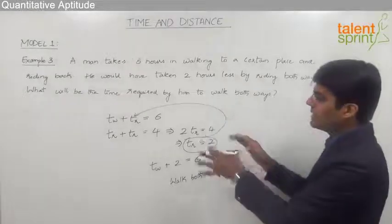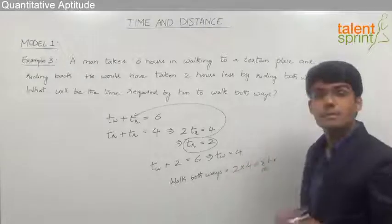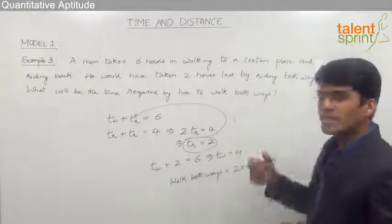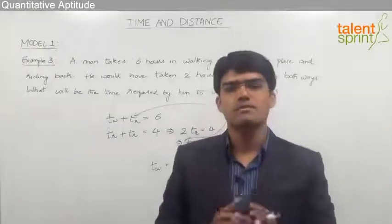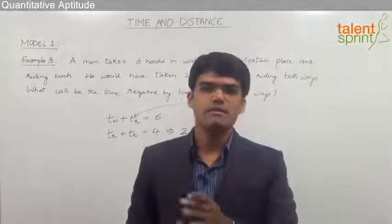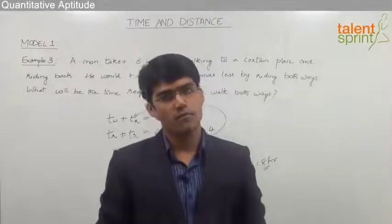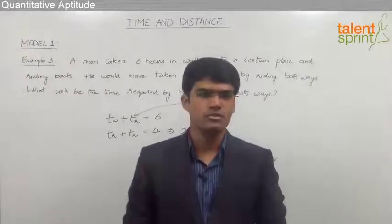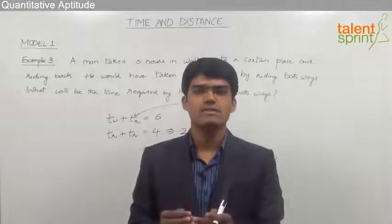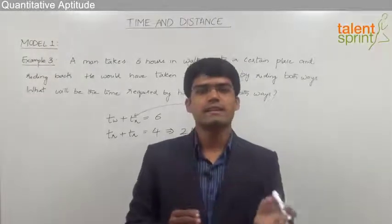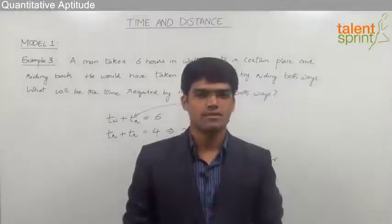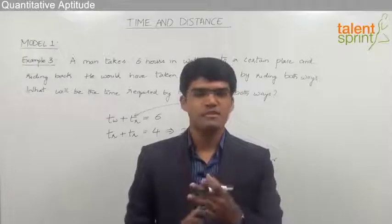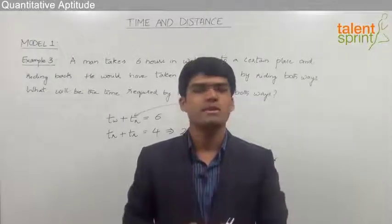Strictly speaking, no paperwork is required if you understand the concept. Walking one way and riding the other takes 6 hours; riding both ways takes 4 hours. So riding one side takes 2 hours, and walking one side takes 6 − 2 = 4 hours. For both sides walking, the answer is 8 hours. Try to answer these questions smartly without doing any paperwork.